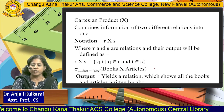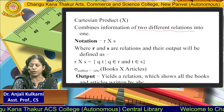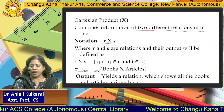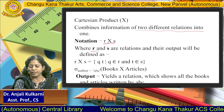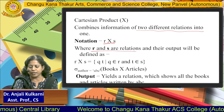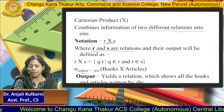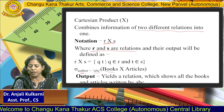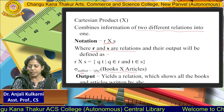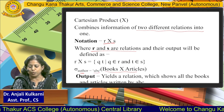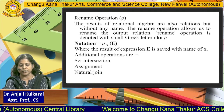Now, Cartesian product. Cartesian product combines the information of two different relations into one, represented as R × S where R and S are relations. For example, selecting where author equals 'ABC' from Books × Articles yields a relation showing all books and articles written by that author.